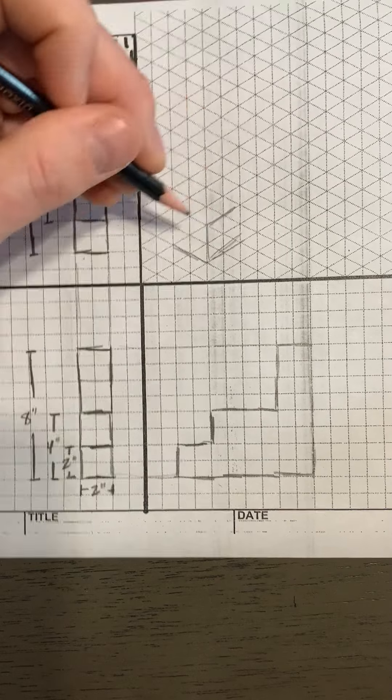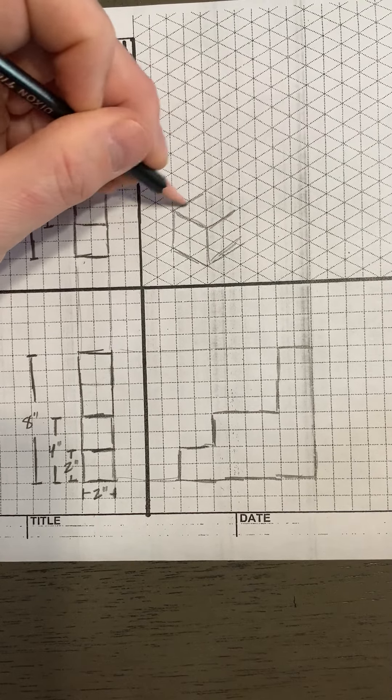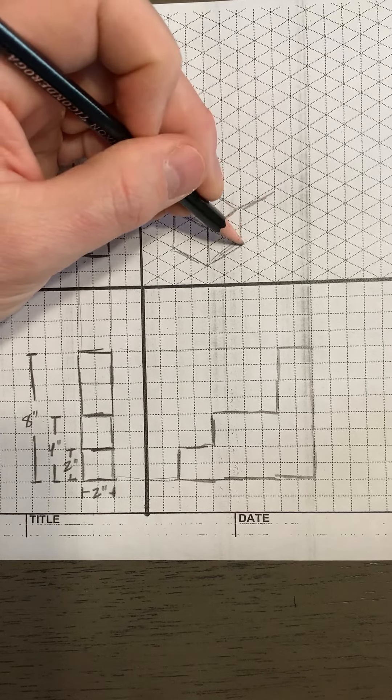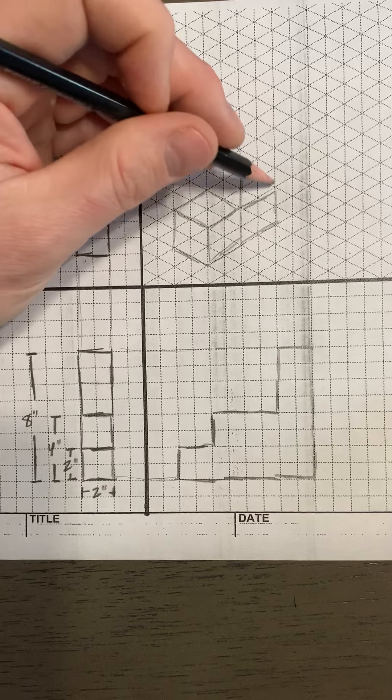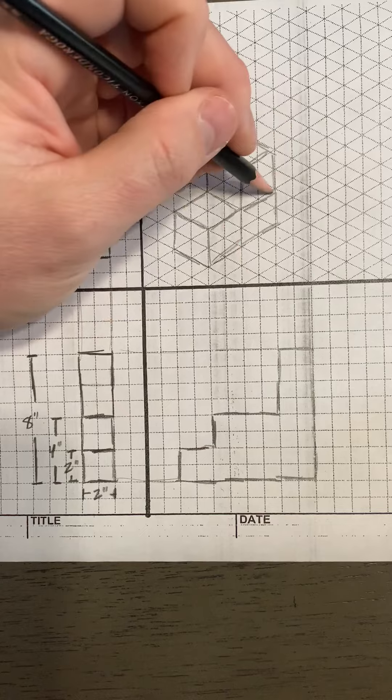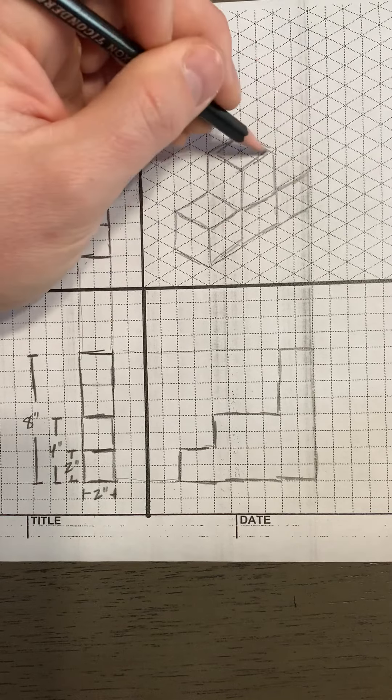So you're going to start, you're going to draw one cube, and then over to the right of that you're going to have two cubes. And the one right next to it is also going to be the same, so that's going to be two cubes.